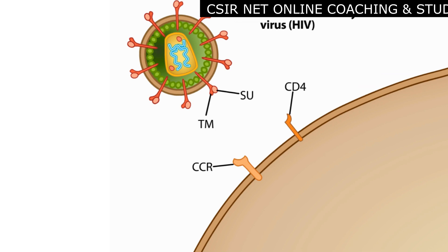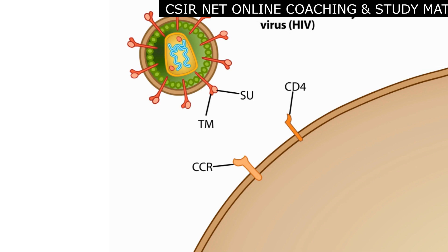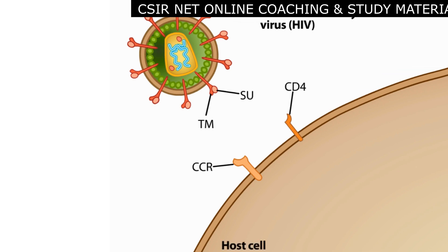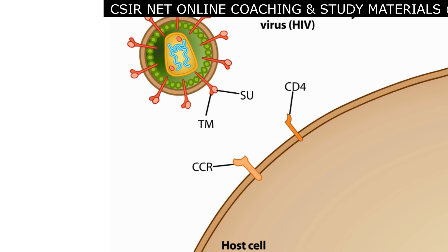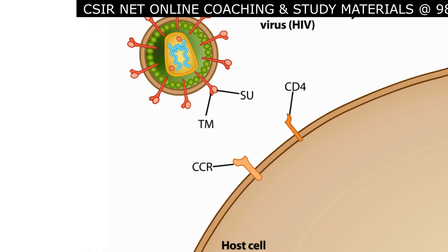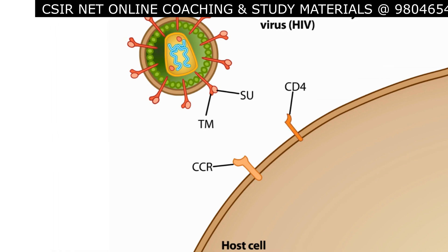The replicative cycle of this virus begins when the HIV attaches to the host cell. The primary receptor for HIV is a surface protein called CD4 that is found on the subset of T cells in the human immune system.